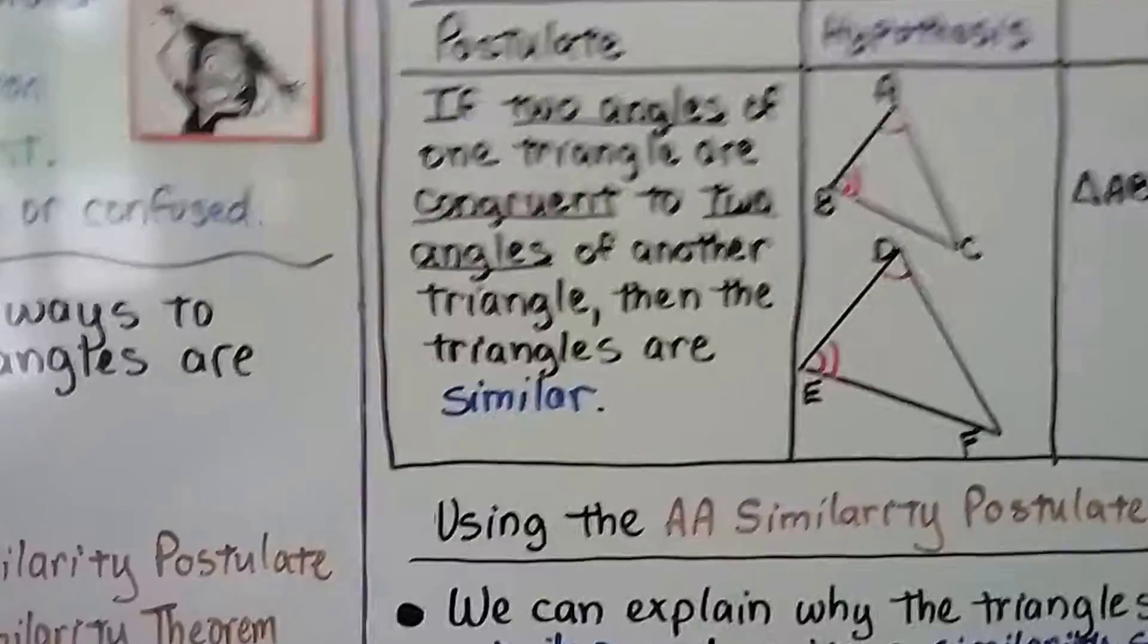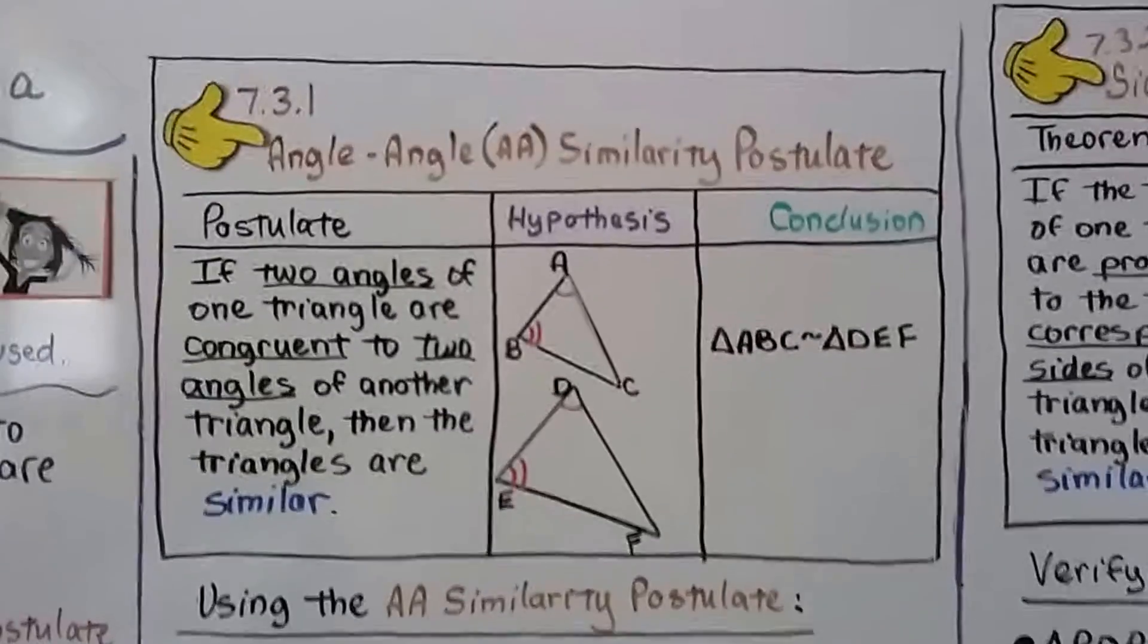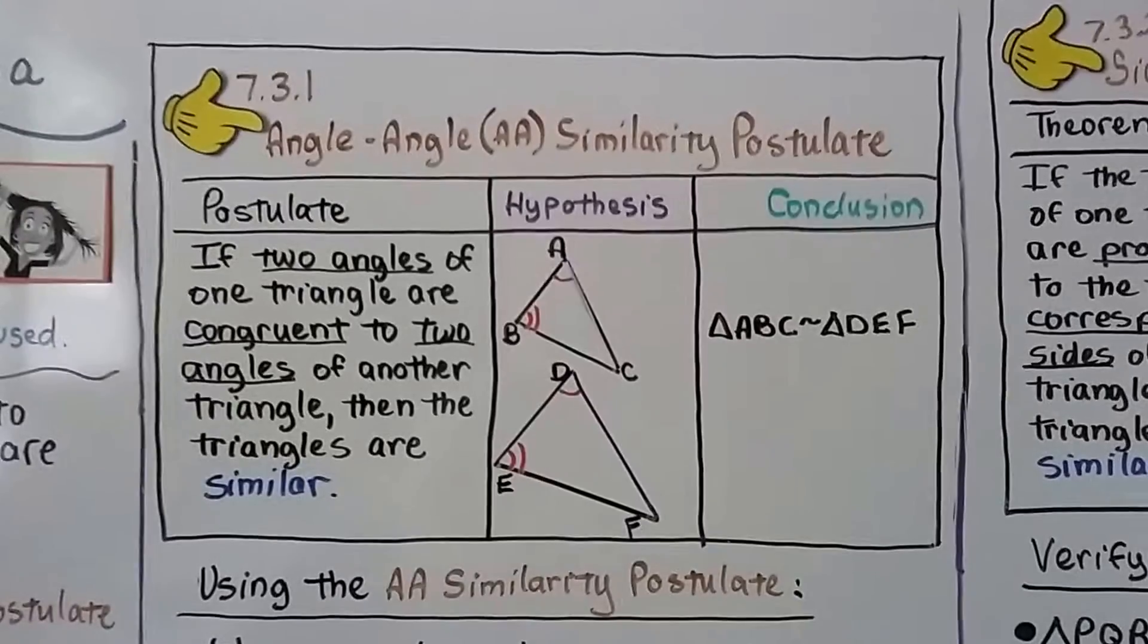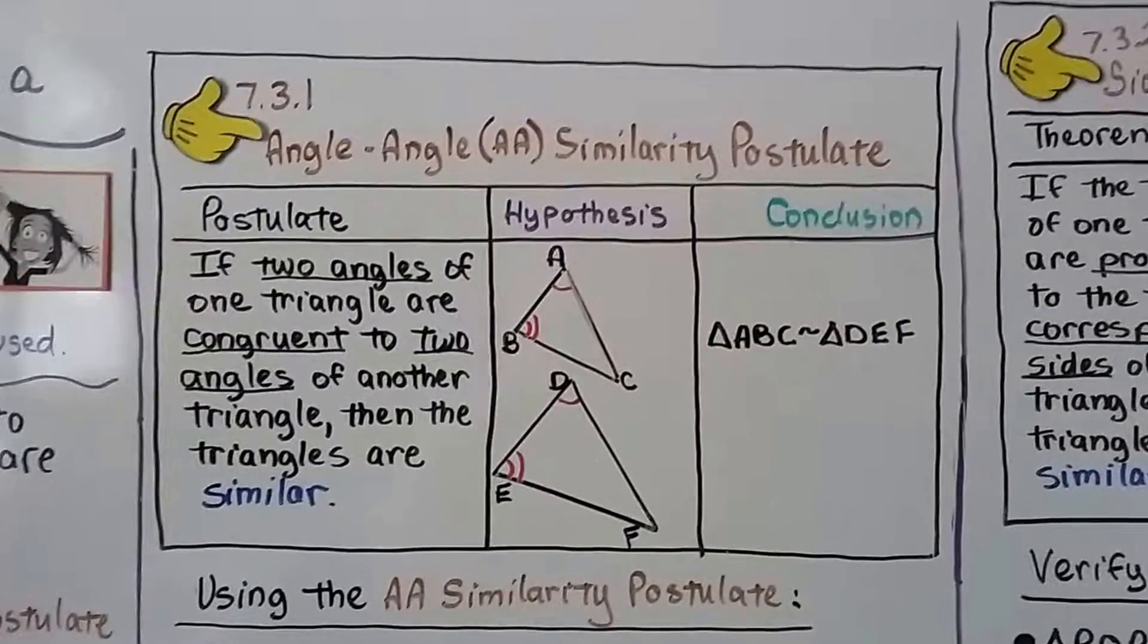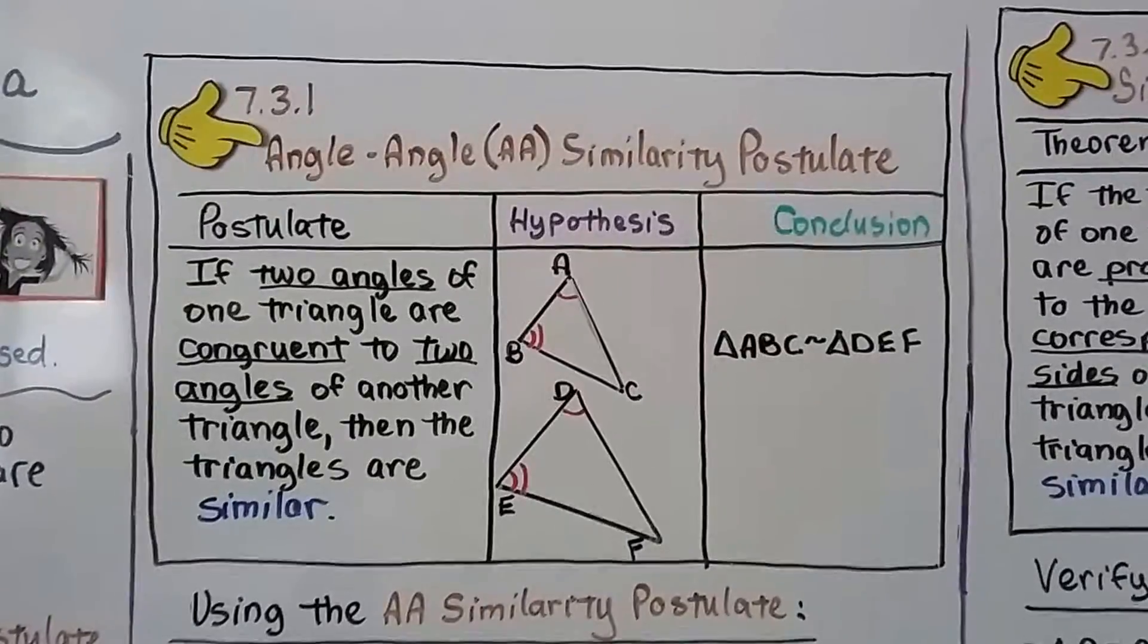Here's our first one. It's the postulate for angle-angle similarity, and it says if two angles of one triangle are congruent to two angles of another triangle, then the triangles are similar. So triangle ABC is similar to triangle DEF.